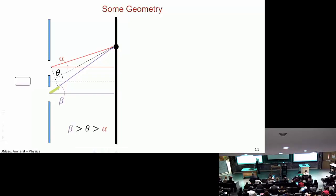So again, beta is the angle for the bottom ray to the point we're talking about. Theta is the middle to the point we're talking about. Alpha is the top to the point we're talking about.